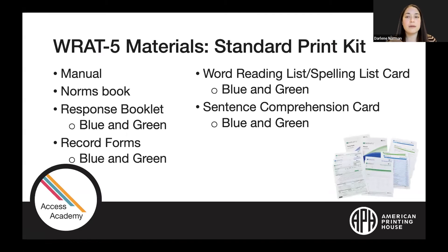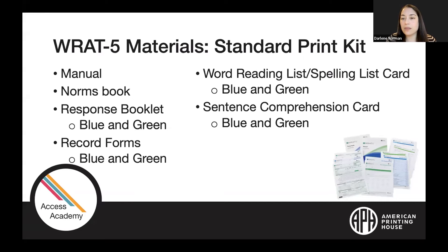The next few slides cover the different kits available. It's important to know that you need the standard kit in order to score the individual's actual performance. Within the standard kit, you have access to the administration manual, the norms book for obtaining scores, the response booklet in blue and green forms, the record form in blue and green forms, the word reading list and spelling list card in both forms, and a comprehension card. Each form has its own materials so you have choices when re-administering.